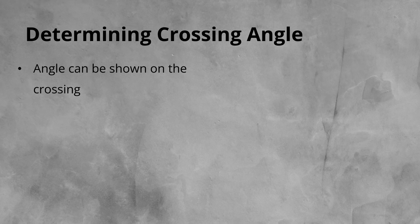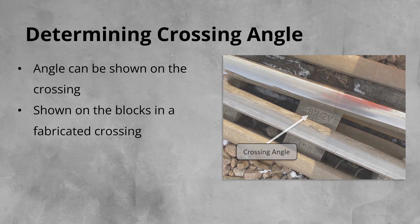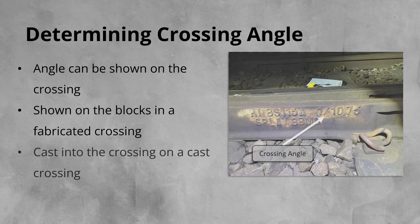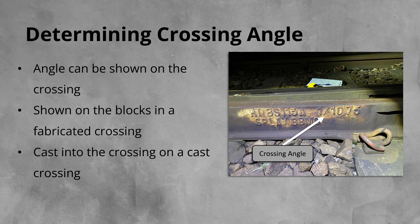In a fabricated crossing, it is often on the blocks used for construction. On a cast crossing, the angle is normally noted on the side along with other details, including a unique number for that casting.